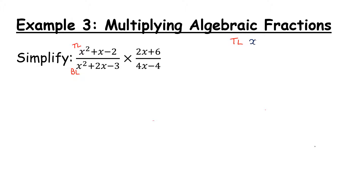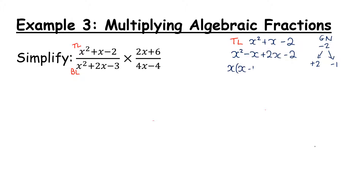The top line is x squared plus x minus 2. My guide number is minus 2. With plus 2 and minus 1, I rewrite this as x squared minus x plus 2x minus 2. x is common in the first pair giving x minus 1, and plus 2 is common in the second pair giving x minus 1. The check: are both brackets the same? Yes. So I pull them out, giving (x minus 1)(x plus 2). That's the top line factorized.